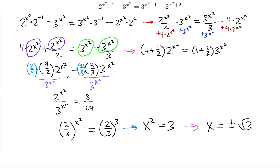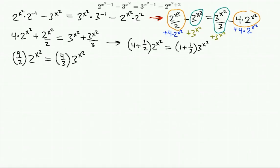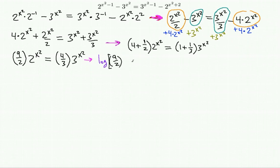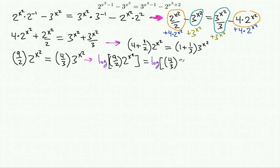Now I'll demonstrate the logarithm method starting from the step where we had 9/2 · 2^(x²) = 4/3 · 3^(x²). We take the logarithm of both sides: log(9/2 · 2^(x²)) = log(4/3 · 3^(x²)).